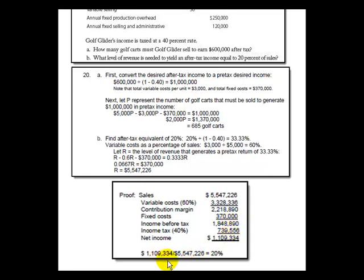We then check that after-tax income is still 20% of sales: dividing $1,109,334 by the revenue of $5,547,226 confirms it does equal 20%.